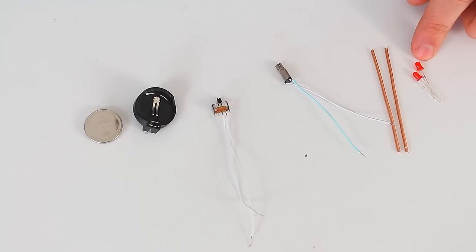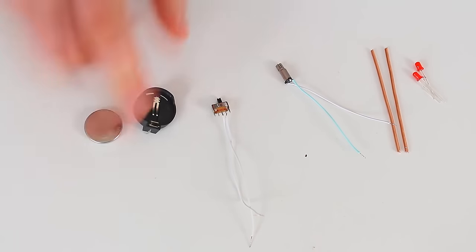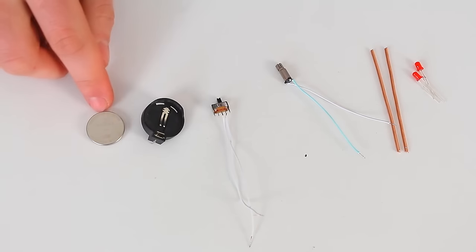First of all, we need two 3 mm LEDs, two pieces of copper wire 7 cm long, a vibromotor that you can take from a mobile phone, a small switch, a battery holder and a coin cell battery.